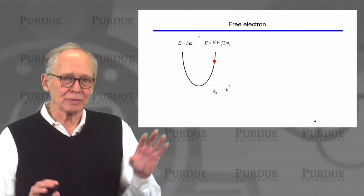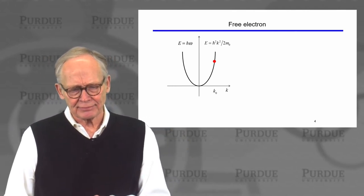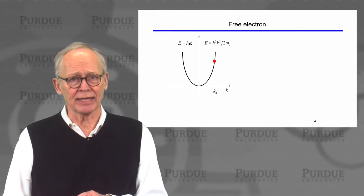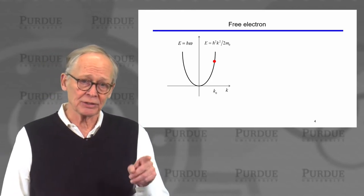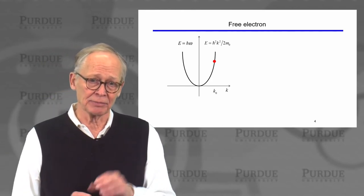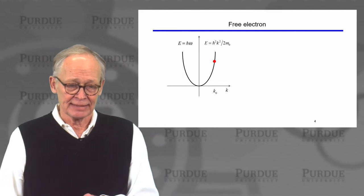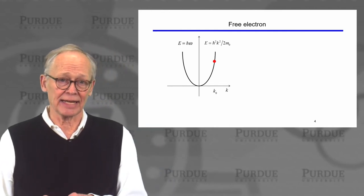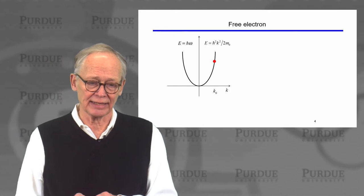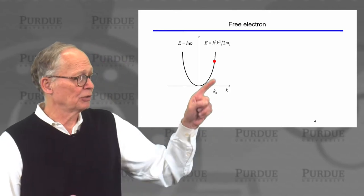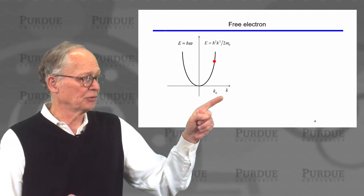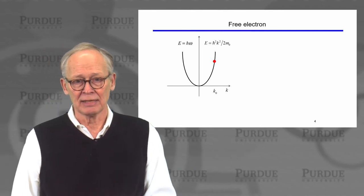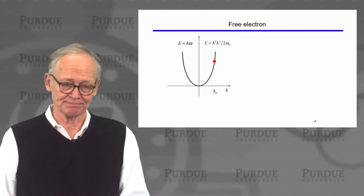For a free electron, its kinetic energy is one-half mv² or momentum squared divided by two times the mass. If we think of momentum as h-bar times wave vector k, then we can write the energy versus crystal momentum or wave vector relation for a free particle like this.